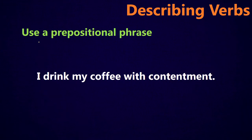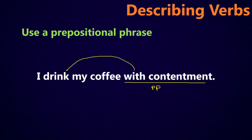You could also use a prepositional phrase to describe the verb. In this case, the prepositional phrase works like an adverb. For example, I drink my coffee with contentment. With contentment is a prepositional phrase describing the way that I am drinking my coffee — the way I'm doing the action. With contentment means that I'm happy, peaceful about it. Contentment is being happy or peaceful or just okay with a situation.